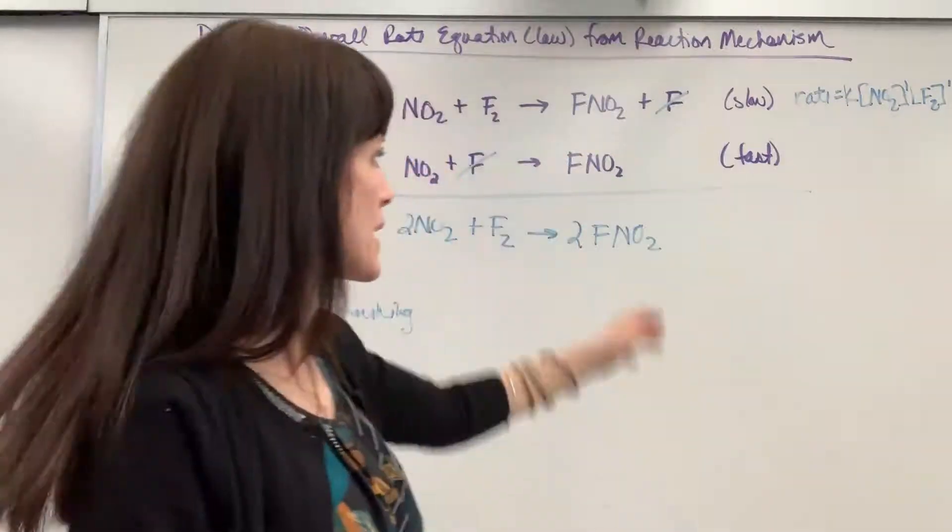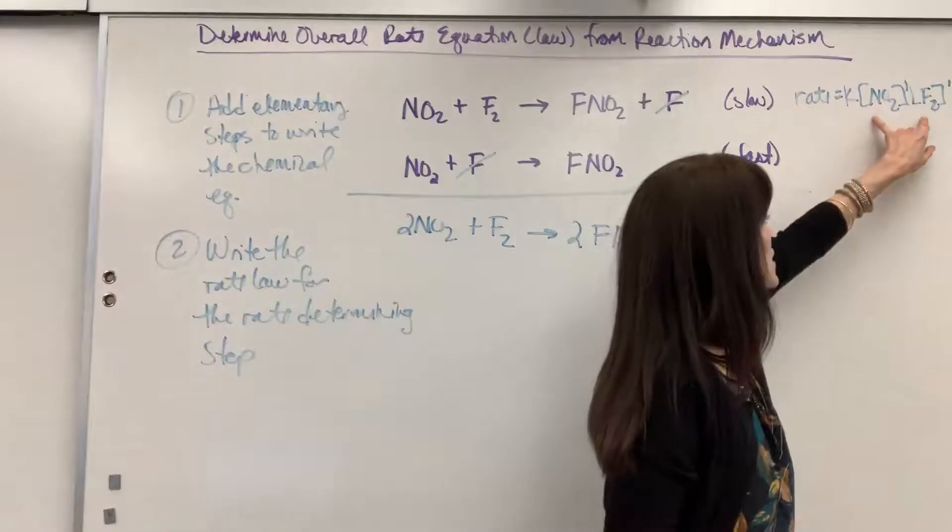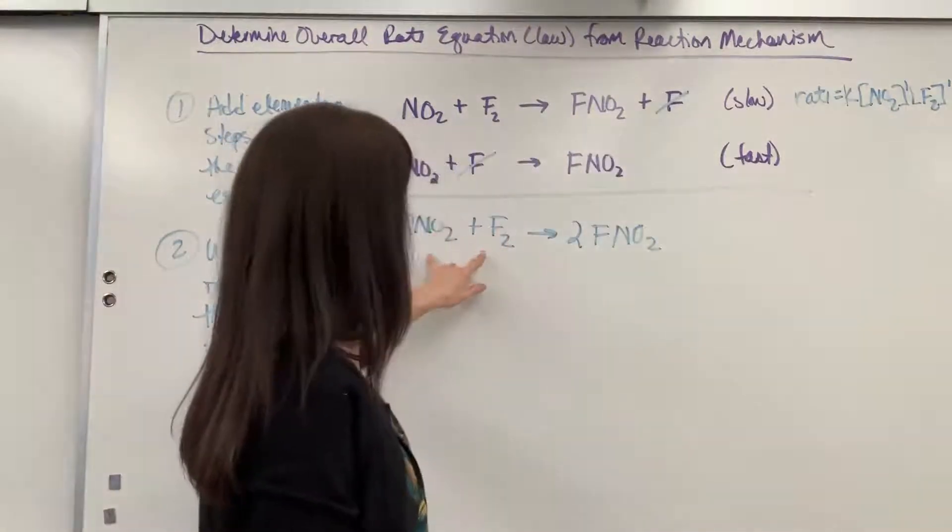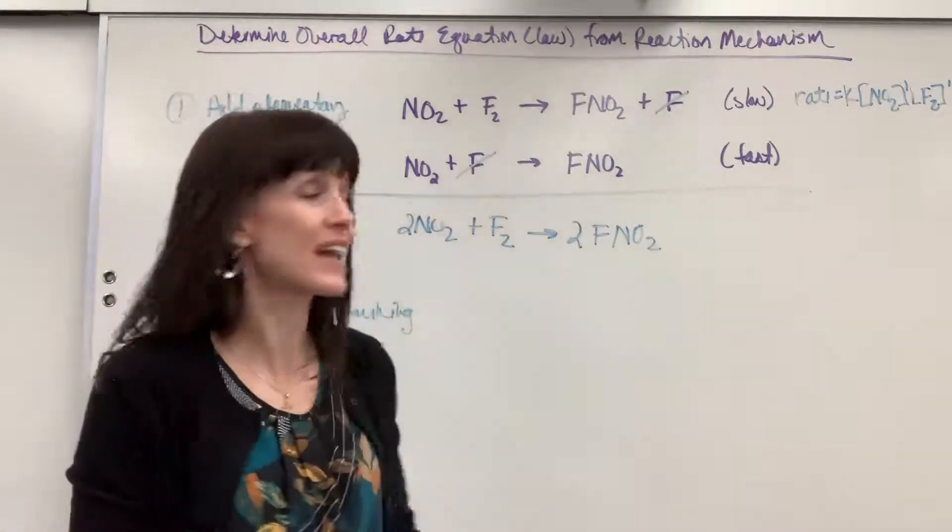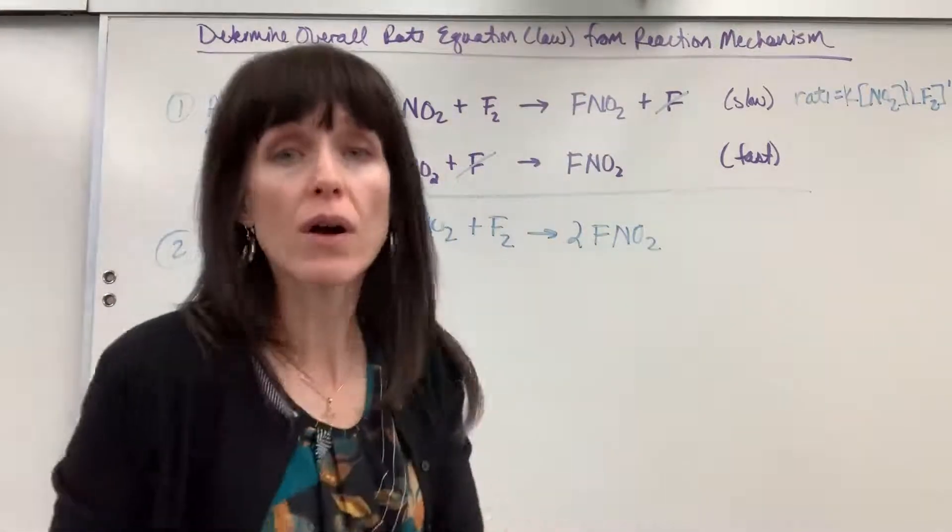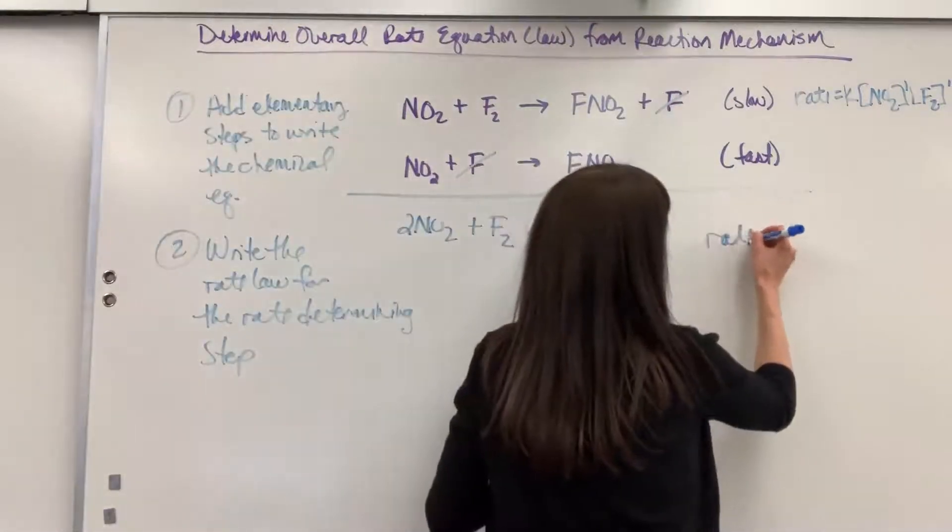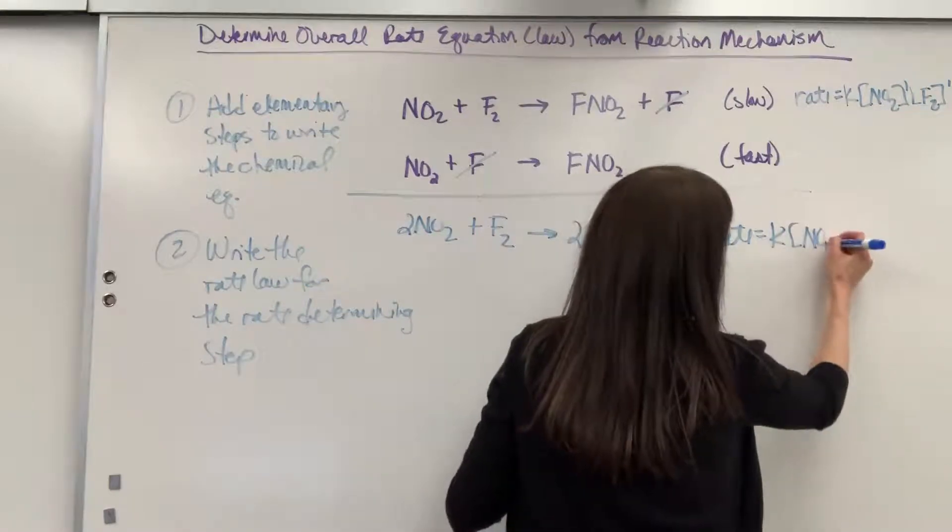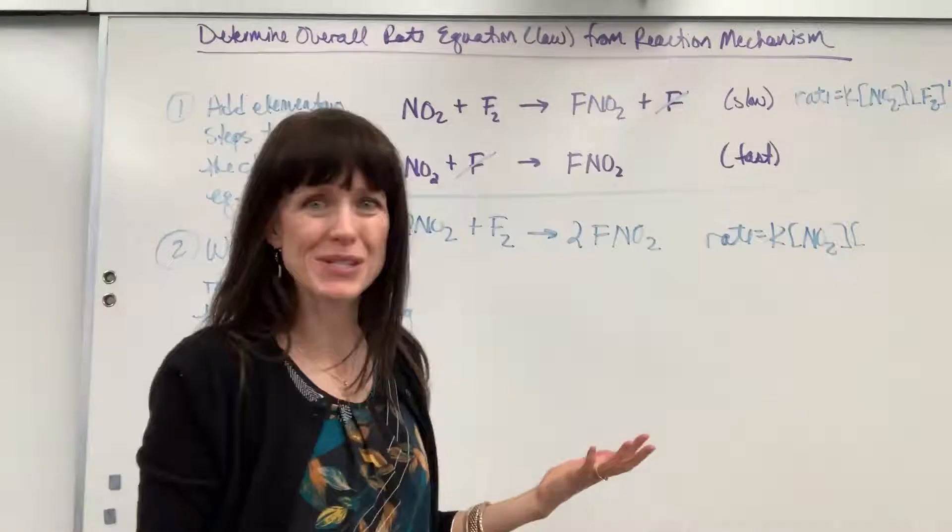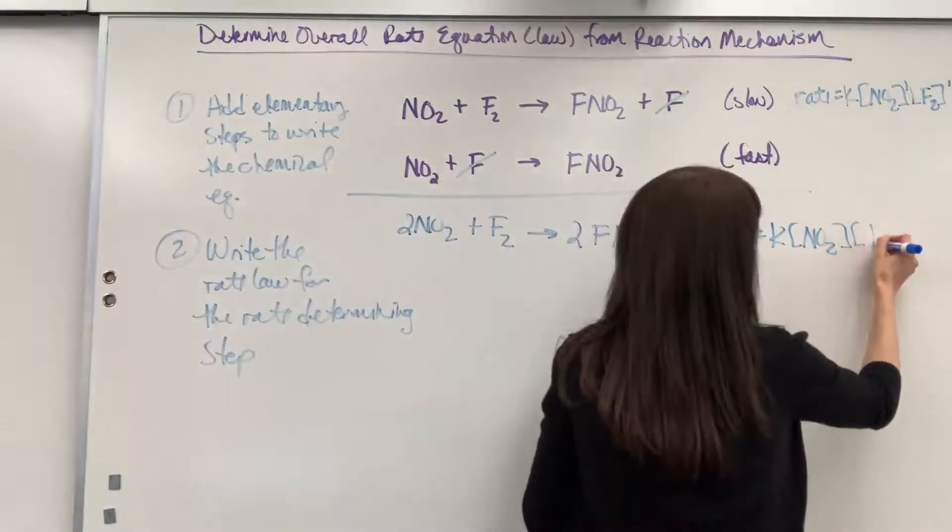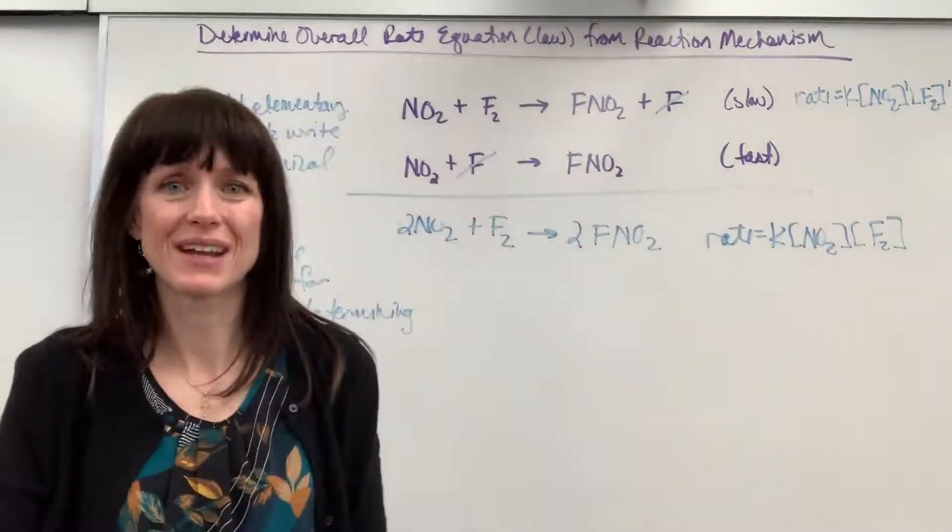One thing I always do is take a look at that to make sure there are no intermediates. Every species you see in that rate law has to be in this equation. So I've got NO2 and F2. Okay, great. So here it is. The true overall rate law of what we observed in nature will be rate equals k times NO2 to the first order—I don't have to write one, it will be understood to be first order—times the concentration of F2. And there we have it. We're done.